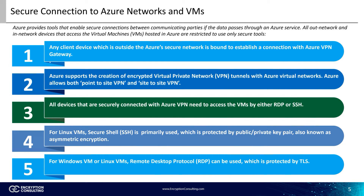Any client device which is outside Azure's secure network is bound to establish a connection with Azure VPN gateway. No client machine residing in any network outside of Azure can directly establish a connection with any Azure-hosted VM. Azure supports the creation of encrypted virtual private network, or VPN, tunnels with Azure virtual networks. It is optional, however highly recommended. Azure also allows both point-to-site VPN and site-to-site VPN. For site-to-site VPN, on-premises VPN appliances are required.